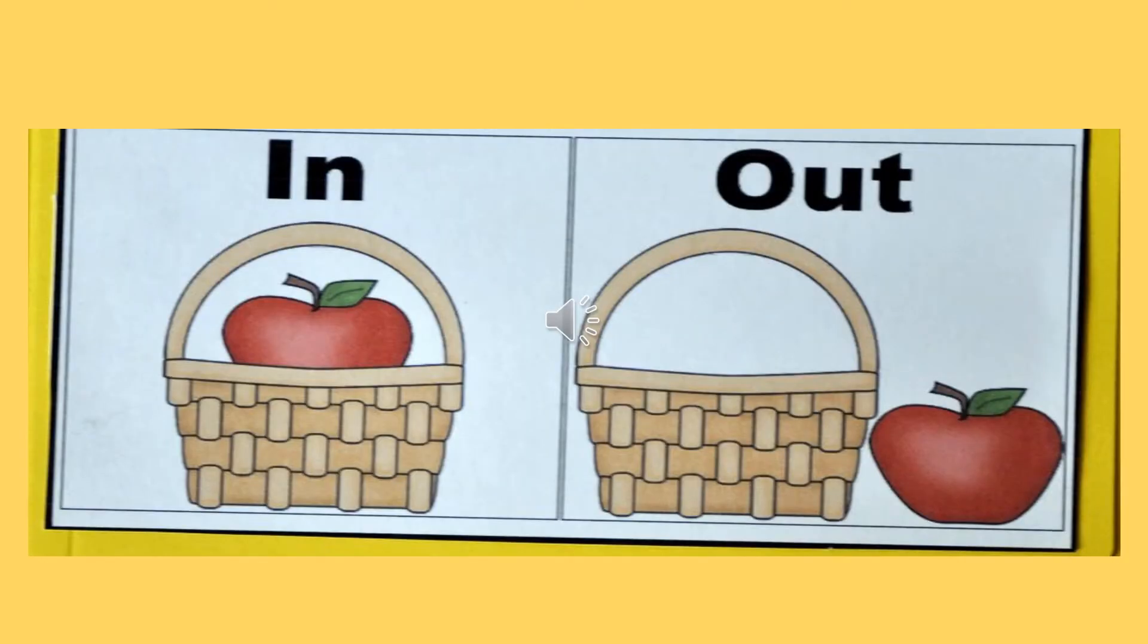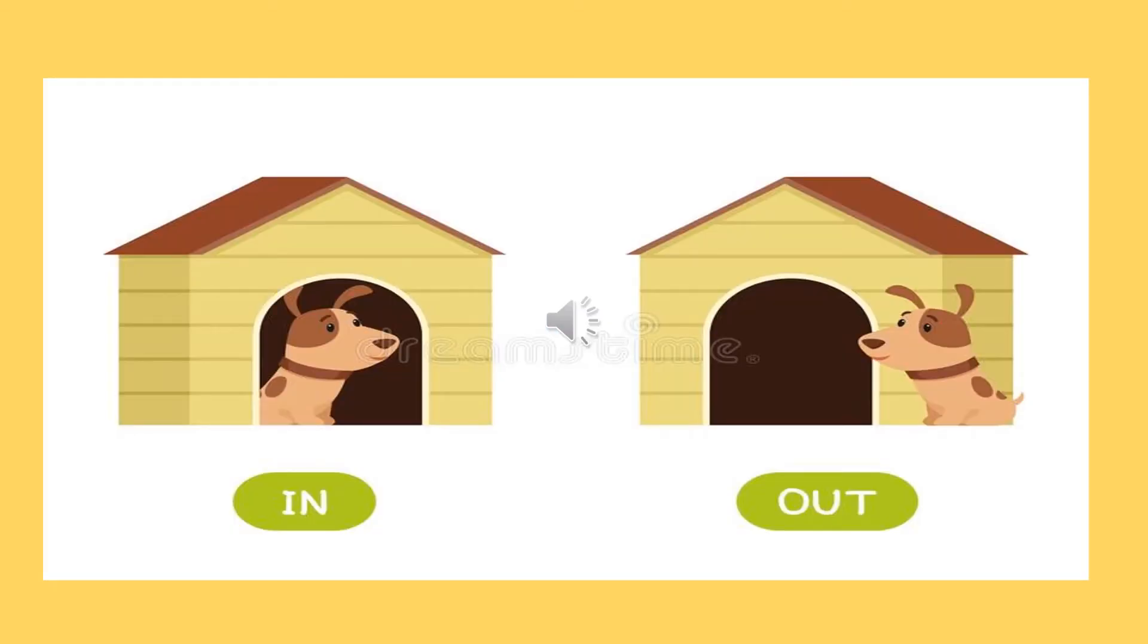In means under, out means bahar. These are two apples. One apple is in the basket and the second apple is out of the basket. In means under and out means bahar.